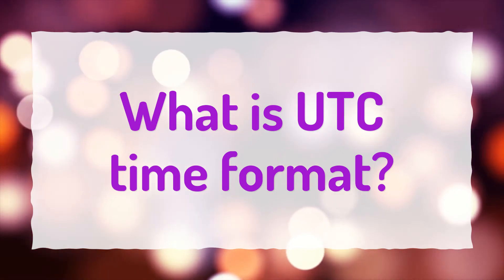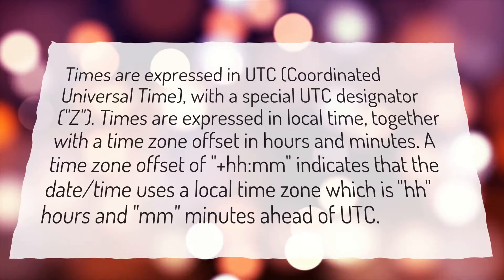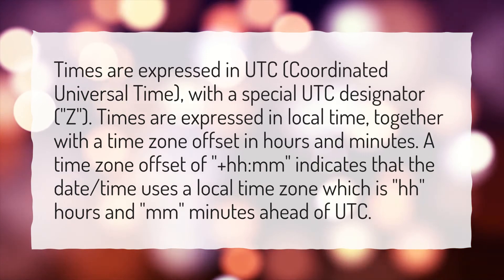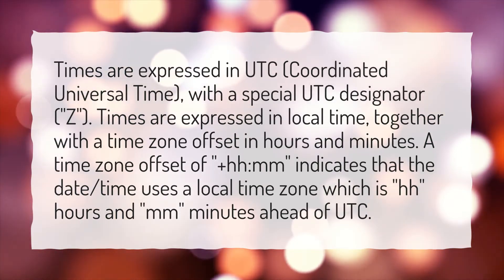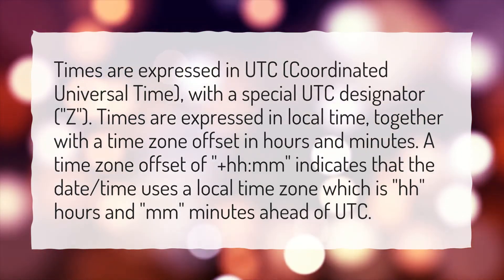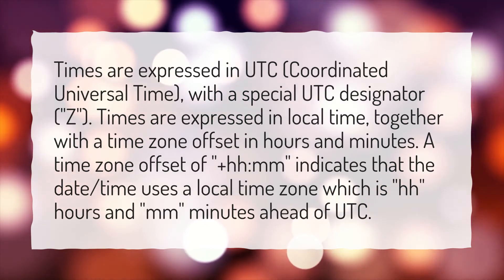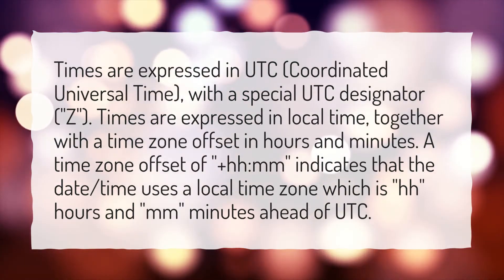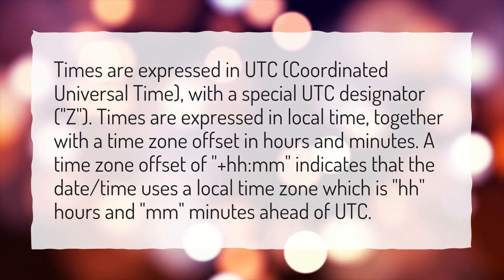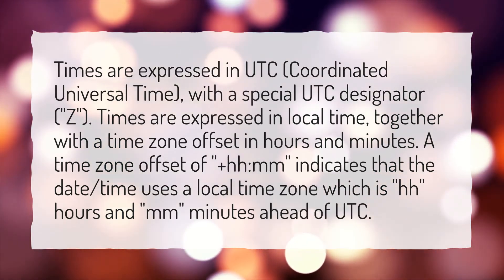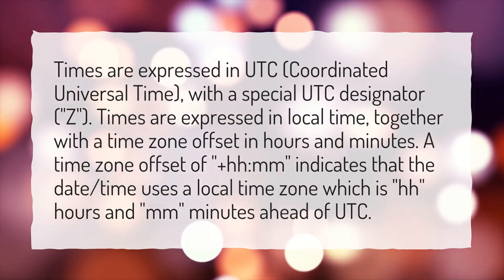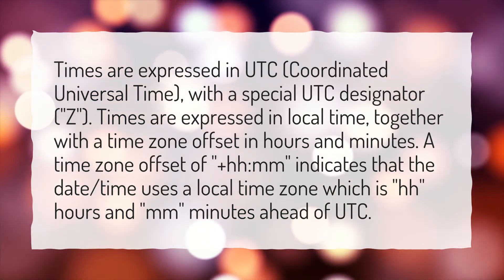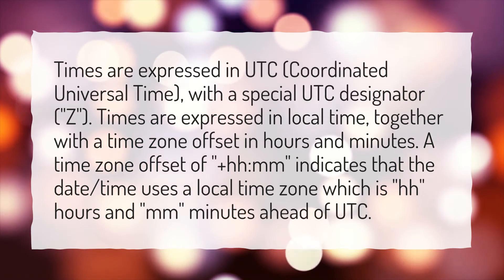What is UTC time format? Times are expressed in UTC, Coordinated Universal Time, with a special UTC designator, Z. Times are also expressed in local time, together with a time zone offset in hours and minutes. A time zone offset of plus HH:MM indicates that the date and time uses a local time zone which is HH hours and MM minutes ahead of UTC.